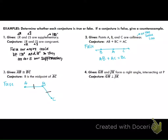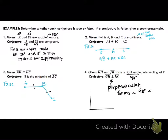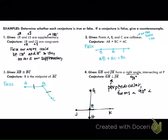Segment GH and JK form a right angle intersecting at P, which means that GH and JK are perpendicular. This symbol means perpendicular, which means they form a 90-degree angle. GH and JK intersect at point P — is GH perpendicular to JK? This one is true. You can't give a counterexample for this one.